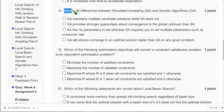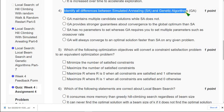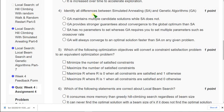Moving on to the fourth question now: identify all differences between simulated annealing and genetic algorithms. For fourth question the probable solution could be first option: GA maintains multiple candidate solutions while SA does not.